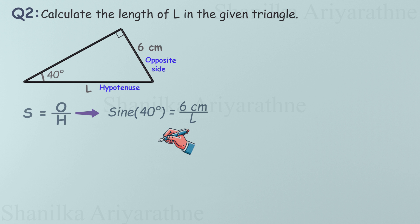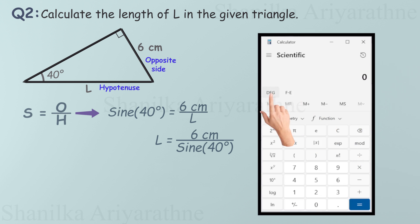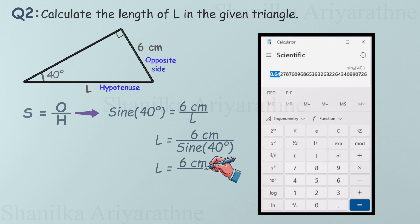To find L, we rearrange the equation. To get the value of sine 40, we have to use the calculator. Make sure your calculator is in degree mode, not radians. 40 and then select the sine. Now, sine of 40 degrees is 0.64. 6 divided by 0.64. So L is 9.37 centimeters.